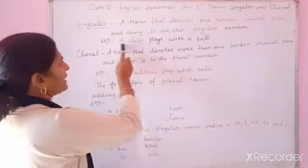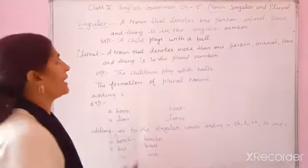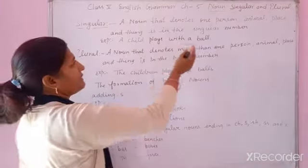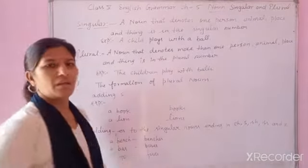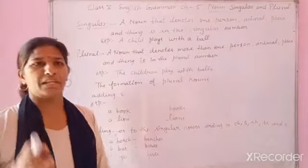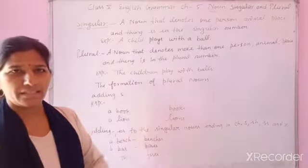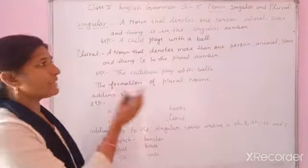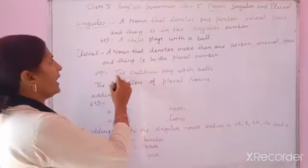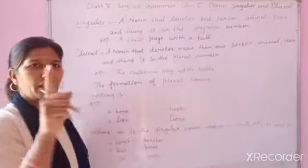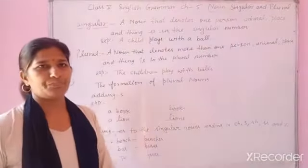For example, 'a child' or 'a student' — we use singular. So 'a child plays with a ball.' What is plural? A noun that denotes more than one person, place, or thing is in the plural number. Jo noun ek se zyada cheezon ko denote kare, use hum plural number kehte hain. For example, 'the children play with balls.'